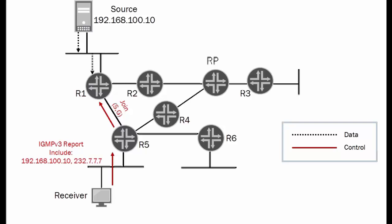That report goes to R5, which is the designated router for the receiver. R5 will generate, as a result, a PIM — protocol-independent multicast — join message specifically to the source address for the group. It sends it toward the designated router for the source, which in this case is R1. R1 will then set up a shortest path tree, and the multicast will go directly from the source through R1 to R5 and to the receiver.